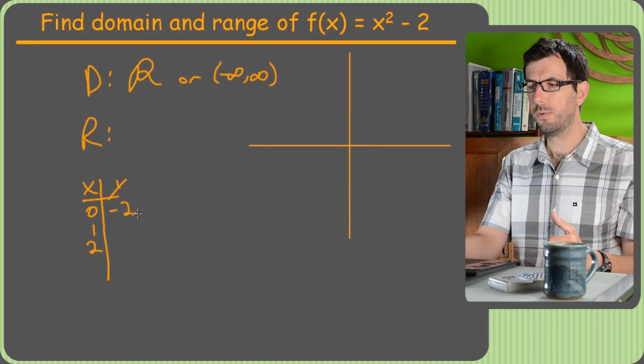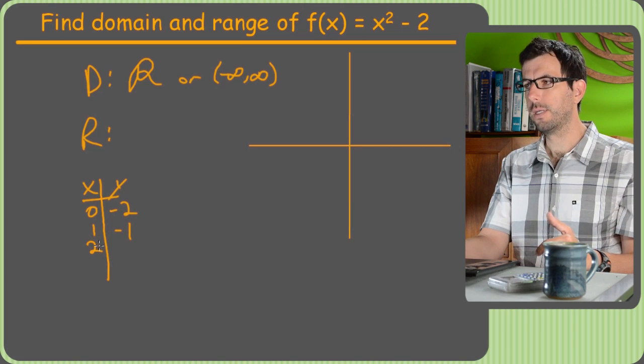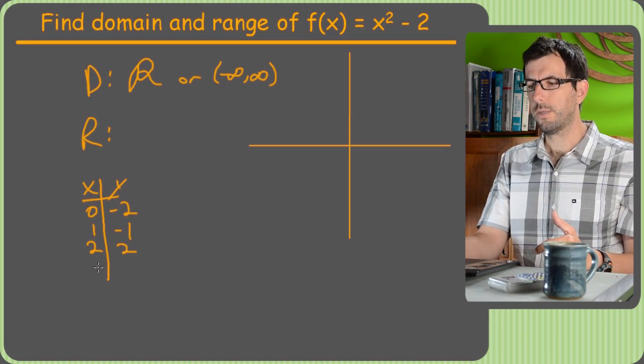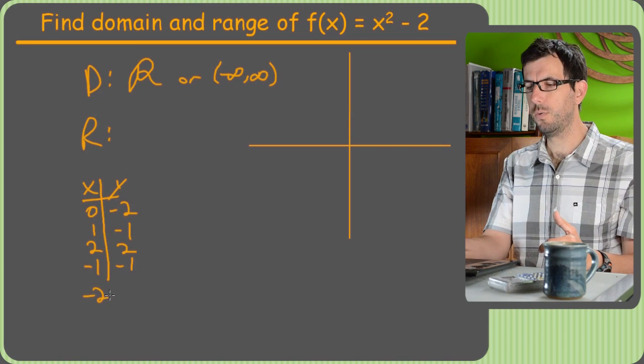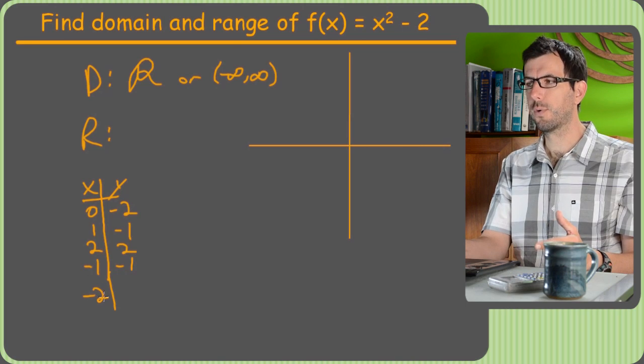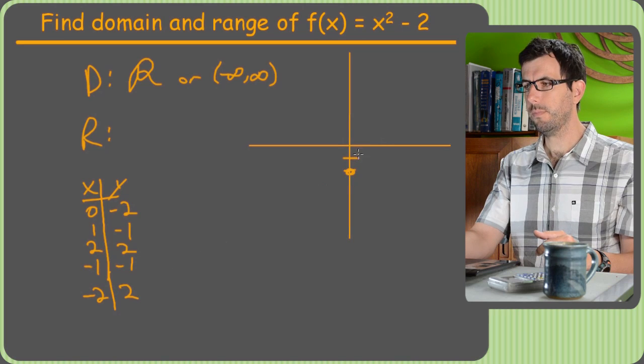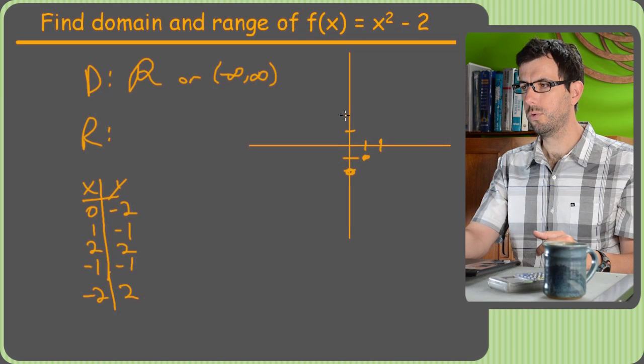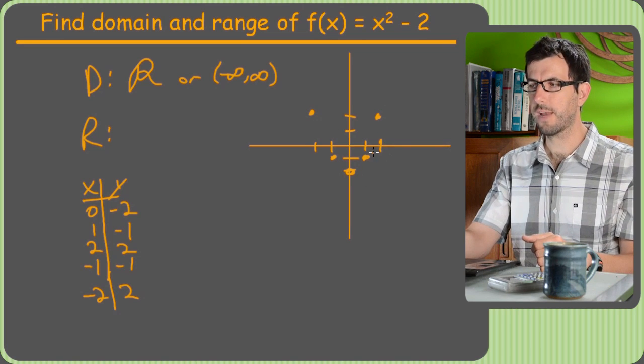If you plug in 0, 1, 2: 0 minus 2 is negative 2. Plug in 1, you get 1 squared minus 2 is negative 1. Plug in 2, you get 4 minus 2 is 2. Let's try negative 1. Negative 1 squared is 1, minus 2 is negative 1. Negative 2 squared is 4, 4 minus 2 is 2. This seems like a pretty good chunk of points. 0 comma negative 2, 1 comma negative 1, 2 comma 2, and these other points. Now you notice parabolas are always symmetrical, so once you get one side and you're pretty sure you've got the vertex, you can just reflect on the other side.